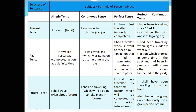Simple past tense: 'I traveled yesterday' — the action of traveling completed at a definite time. Past continuous tense: 'I was traveling' — the action of traveling was going on at some time in the past. Past perfect tense: 'I had traveled when I went to meet him' — two actions are present; traveling was completed before meeting him. Past perfect continuous tense: 'I had been traveling when lights suddenly went out' — two actions: one is traveling and it is continuing when the second action happens.